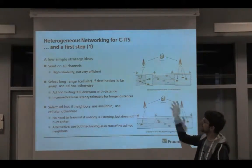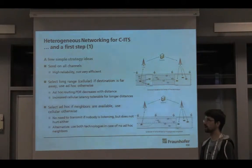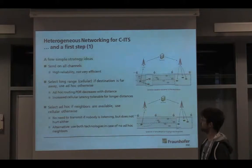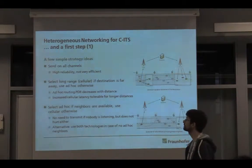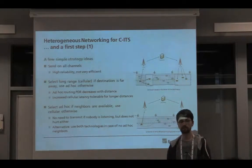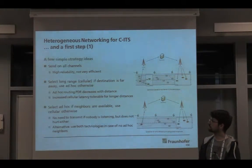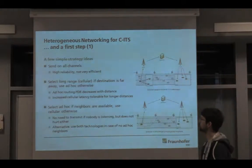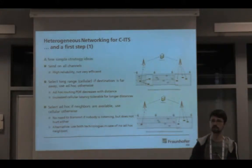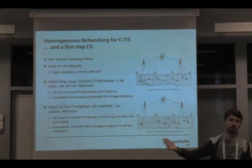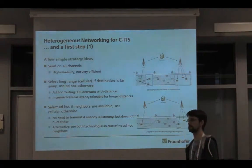A very basic idea: the easiest thing would be to send on all channels simultaneously — we are talking about safety-critical systems, so if I have more than one option, why not use all of them? However, this is not efficient in terms of channel usage and resources, and we don't want to put all CAMs and DEMs on the cellular network. An alternative: assuming position-based addressing and routing, select a long-range technology like cellular for distant destinations and use local ad hoc communication for short range, under the assumption that packet delivery ratio decreases with distance in ad hoc networks and multi-hop error accumulation makes ad hoc impractical beyond a certain distance.